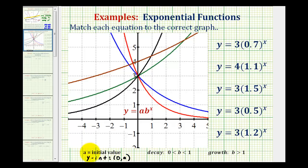The reason it's called the initial value is that often we use the variable t instead of x to represent time, and when t is equal to zero, that would be the starting amount, or initial value, before the exponential growth or decay starts.